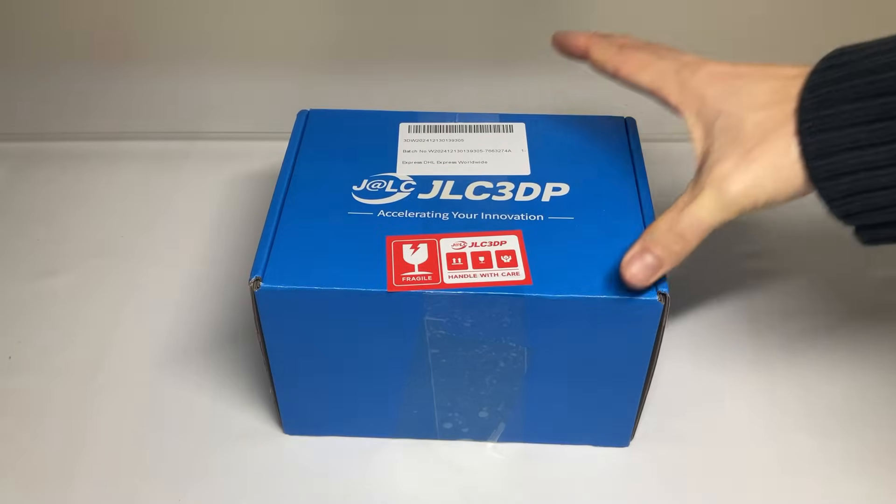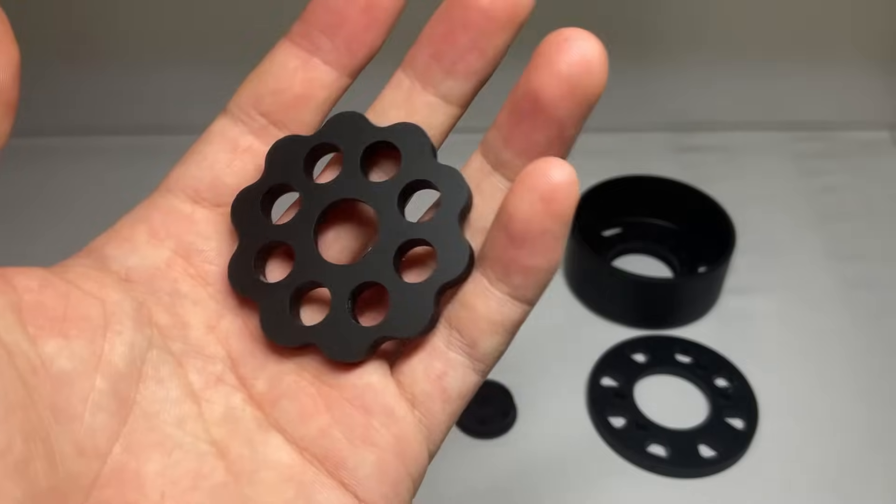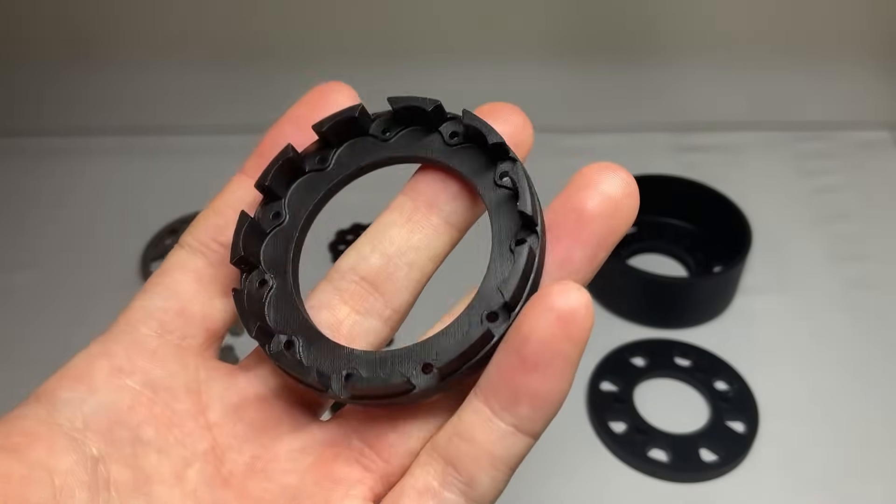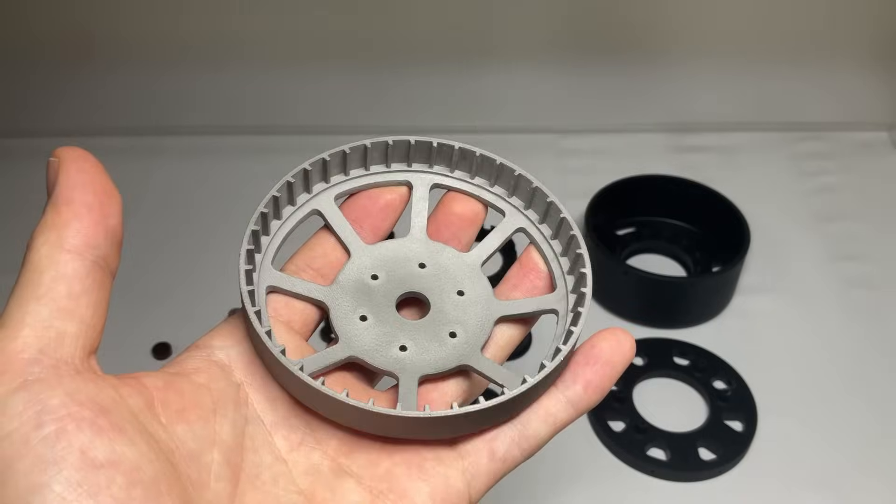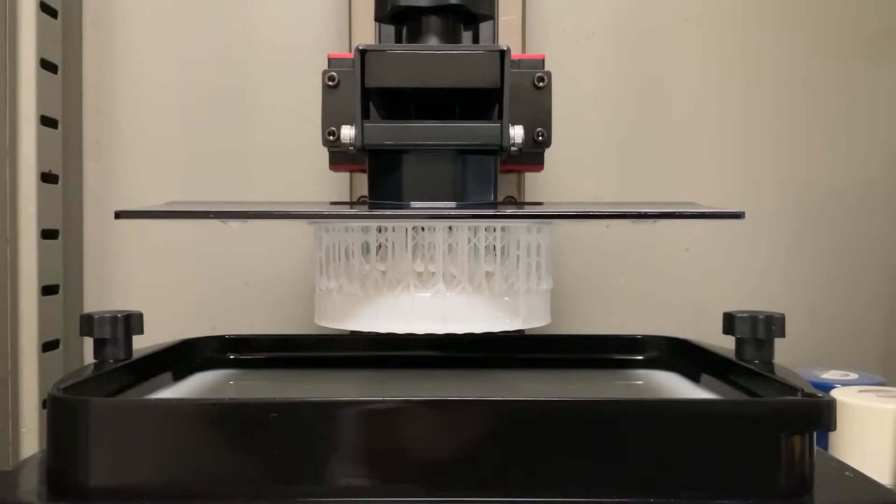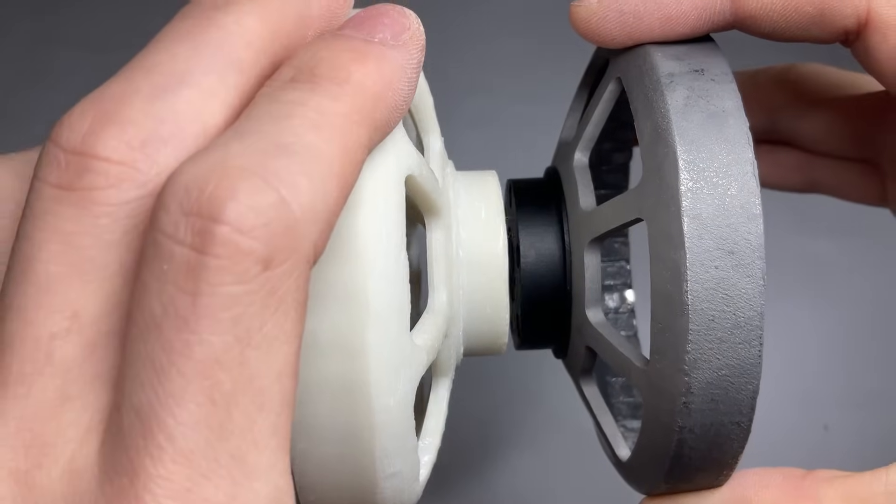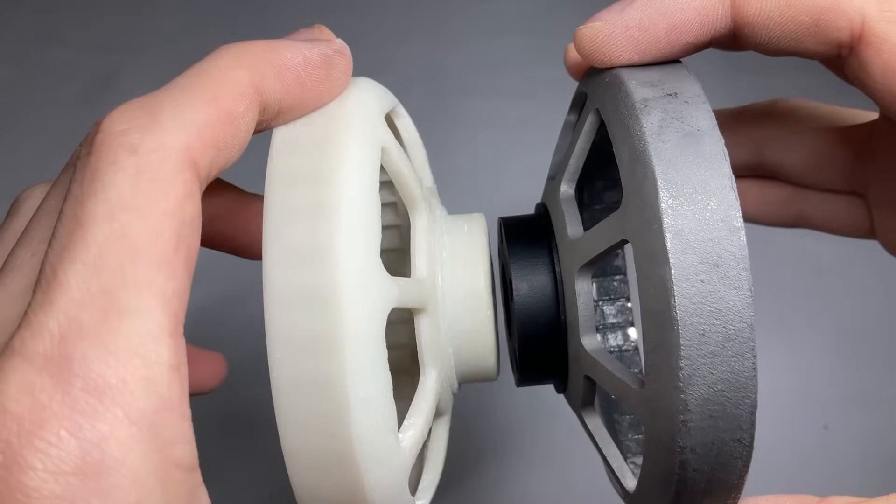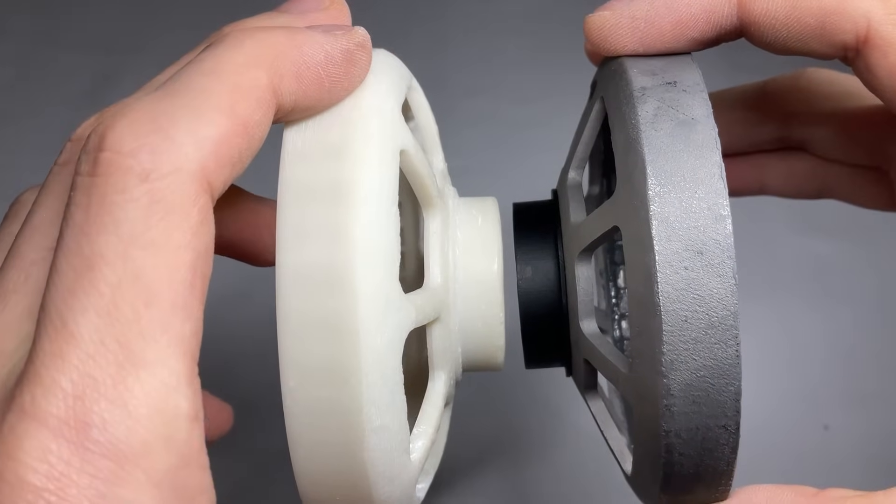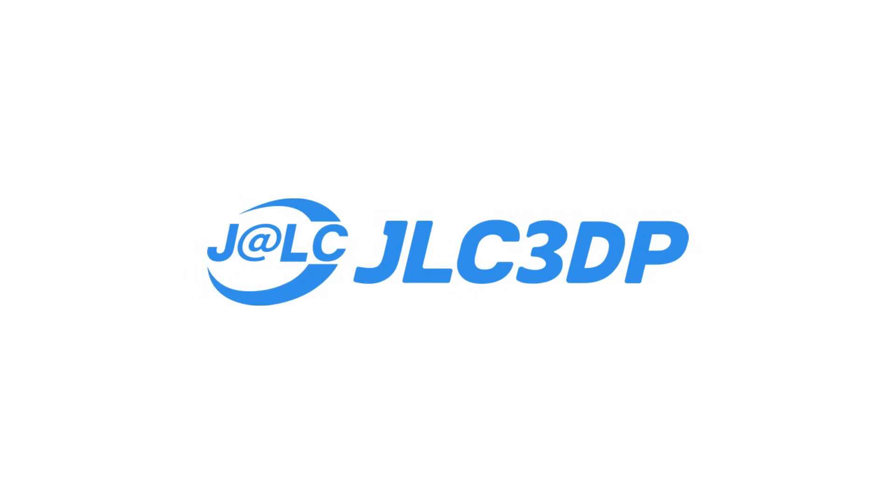It took about six days to receive my parts after ordering. There are many critical components here that require tight tolerances, yet they arrived with no warping at all. Here's a part I printed myself using resin 3D printing at home. You can see some distortion where the support material was attached, but on the same shape printed by JLC3DP, there's no warping whatsoever. If your project requires high-precision 3D printed parts, definitely check out JLC3DP.